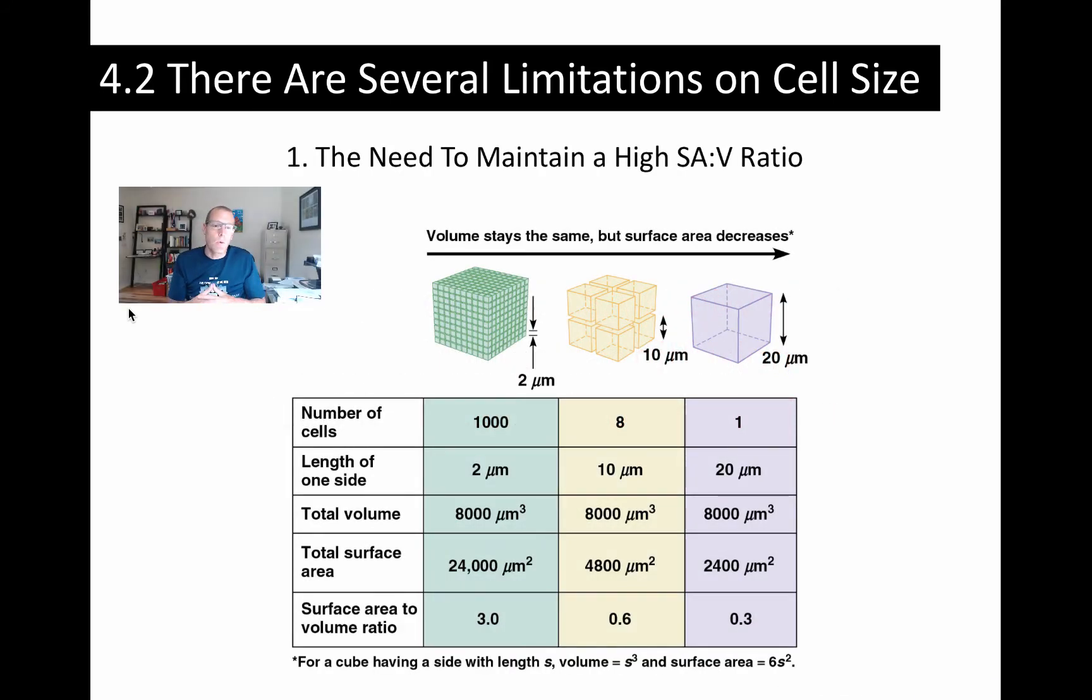So let's explore this first one. The need to maintain a high surface area to volume ratio. This is usually the major restricting limit on cell size. You've got to maintain an adequate surface area to volume ratio. This is important because there are exchanges between the cell and its surroundings. You can think about that as nutrient exchange or diffusion of gases, that kind of thing.